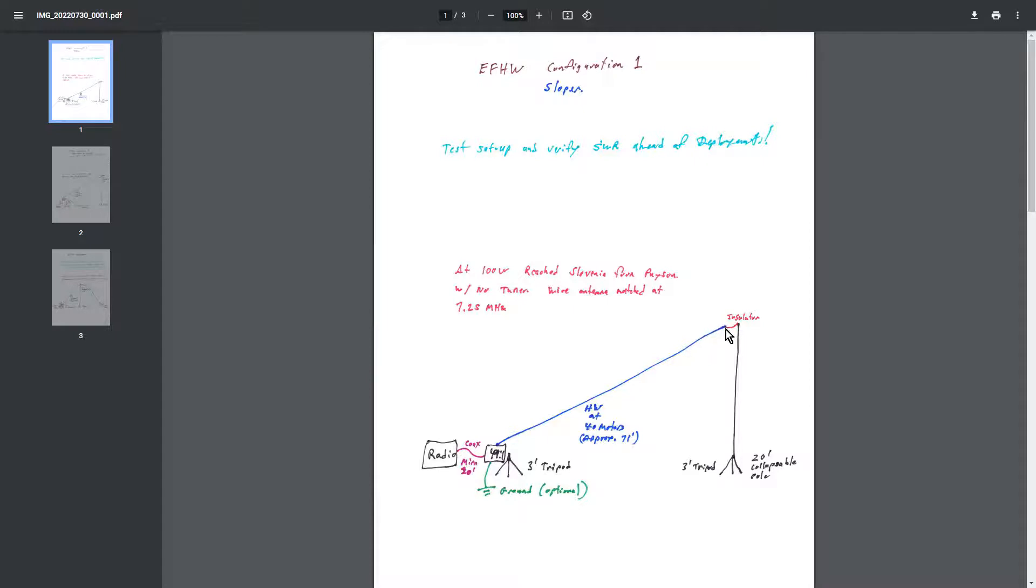And of course it doesn't stretch in a straight line, it droops like this. So it was actually very close to the ground for a long ways. But then there's an insulator at the top and that was that. And I was able to reach Slovenia. And that's pretty cool. So that was at a hundred watts and no amplifier. So that's Sloper 1.